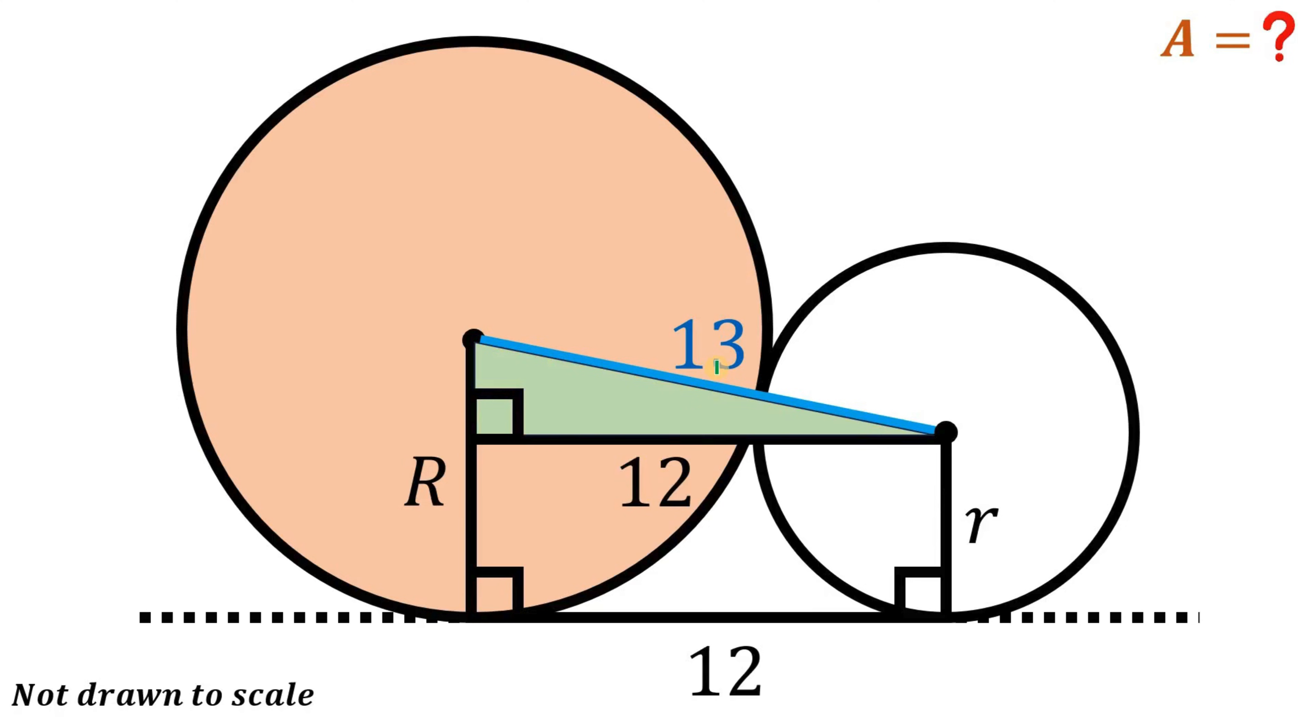Now using the Pythagorean theorem, we can calculate this remaining side. So this is just square root of 13 squared minus 12 squared. So solving for the other leg, we have square root of 13 squared minus 12 squared.